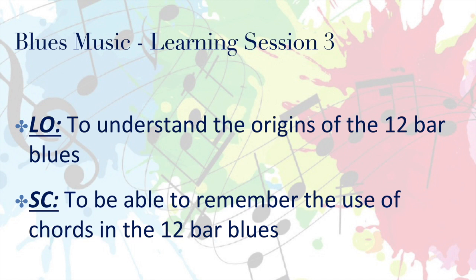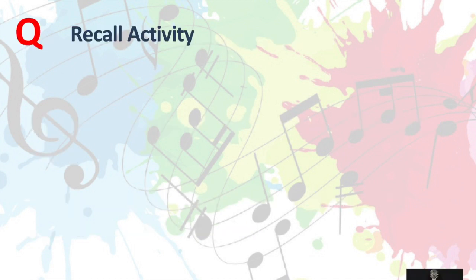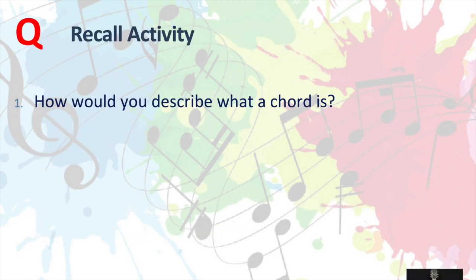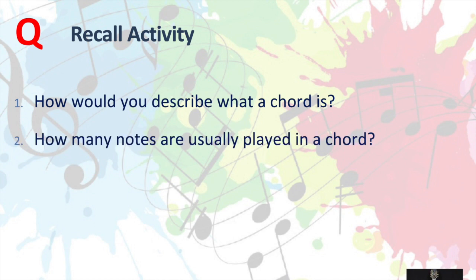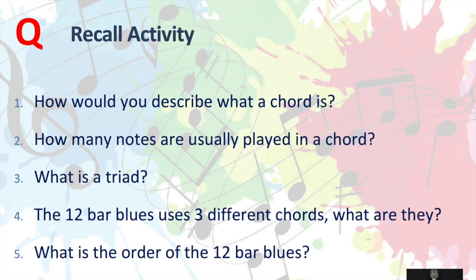Just remember what our learning objective was: to understand the origins of the 12-bar blues, and to be able to remember the use of the chords in the 12-bar blues. So hopefully you've been able to do that. Can you answer these questions now? How would you describe what a chord is? How many notes are usually played in a chord? What is a triad? The 12-bar blues uses three different chords — what are they? And what is the order of the 12-bar blues? Pause the video here to answer your questions.